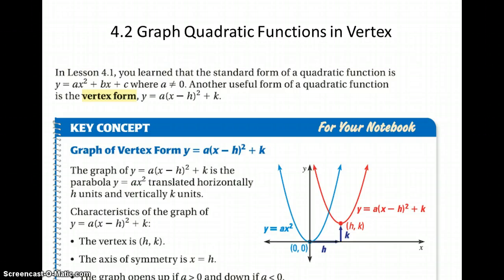Vertex form is a little bit more familiar for a lot of us, just because we used it when we were graphing absolute value. Vertex form is y equals a times the quantity x minus h squared plus k. So for us, our vertex, just like it was before, is going to be h, k.